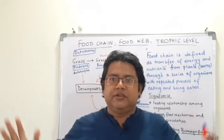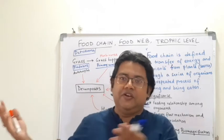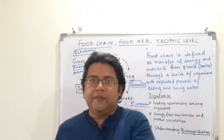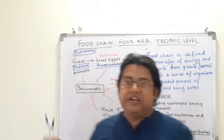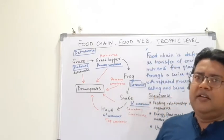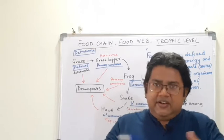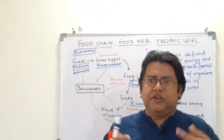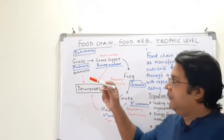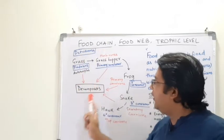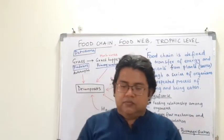Detritivores can be considered a part of decomposers in a broad sense because ultimately, although in a different way, they both break down complex material into smaller molecules. When we say decomposers, we normally refer to fungi, bacteria, and microbes which release chemicals to degrade complex material into small molecules and absorb them for food. After decomposition, there is a recycling of material that goes back to the atmosphere or is taken up by new autotrophs or plants.